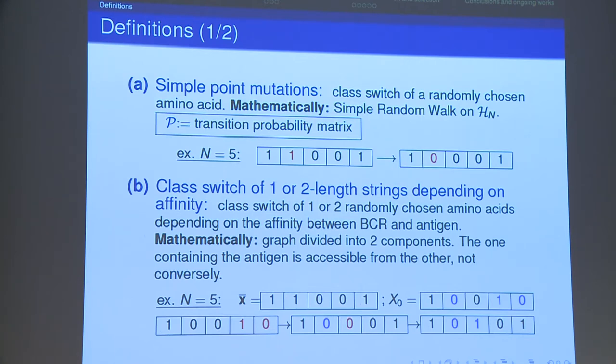Of course we can complexify this model in many different ways. For example here we propose a model of class switch of one or two length strings depending on the affinity. In particular if the Hamming distance between BCR and antigen is greater or equal to two then we have to switch two bits, one bit otherwise. Mathematically what we obtain is the graph divided into two sub-graphs. The one containing the antigen target cell is accessible from the other but not conversely. We can understand maybe better from this little example how this mutational model works. At the beginning the Hamming distance is equal to three, so we have to change for the first step two elements. Therefore here we have just one bit, the Hamming distance just equal to one. And so for the next time step we will have to change just one bit and so on.